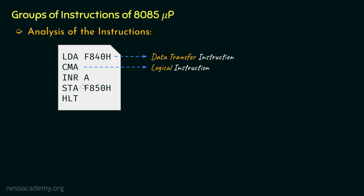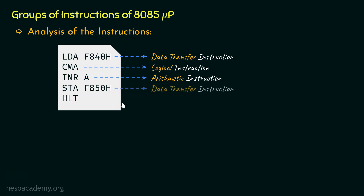The next instruction is INRA. With the content of the accumulator we are going to add 1 — in other words, increment the contents within the accumulator. Clearly addition will be performed, so this is an arithmetic instruction. Coming to the next instruction, STA F850 — we are going to store the content of the accumulator to a particular memory location, so data is being transferred. This instruction also falls under data transfer.